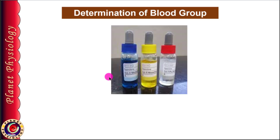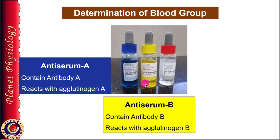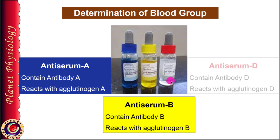These anti-serums are color coded. Anti-serum A is always blue in color — it contains agglutinin A, that is, antibodies against agglutinogen A. Hence, if RBCs possess agglutinogen A, these antibodies will react with them and show agglutination reaction, causing RBCs to clump and be visualized by the naked eye. Anti-serum B is always yellow and has antibody B, which reacts only with agglutinogen B. Anti-serum D is transparent and has antibody D, which reacts only with agglutinogen D.